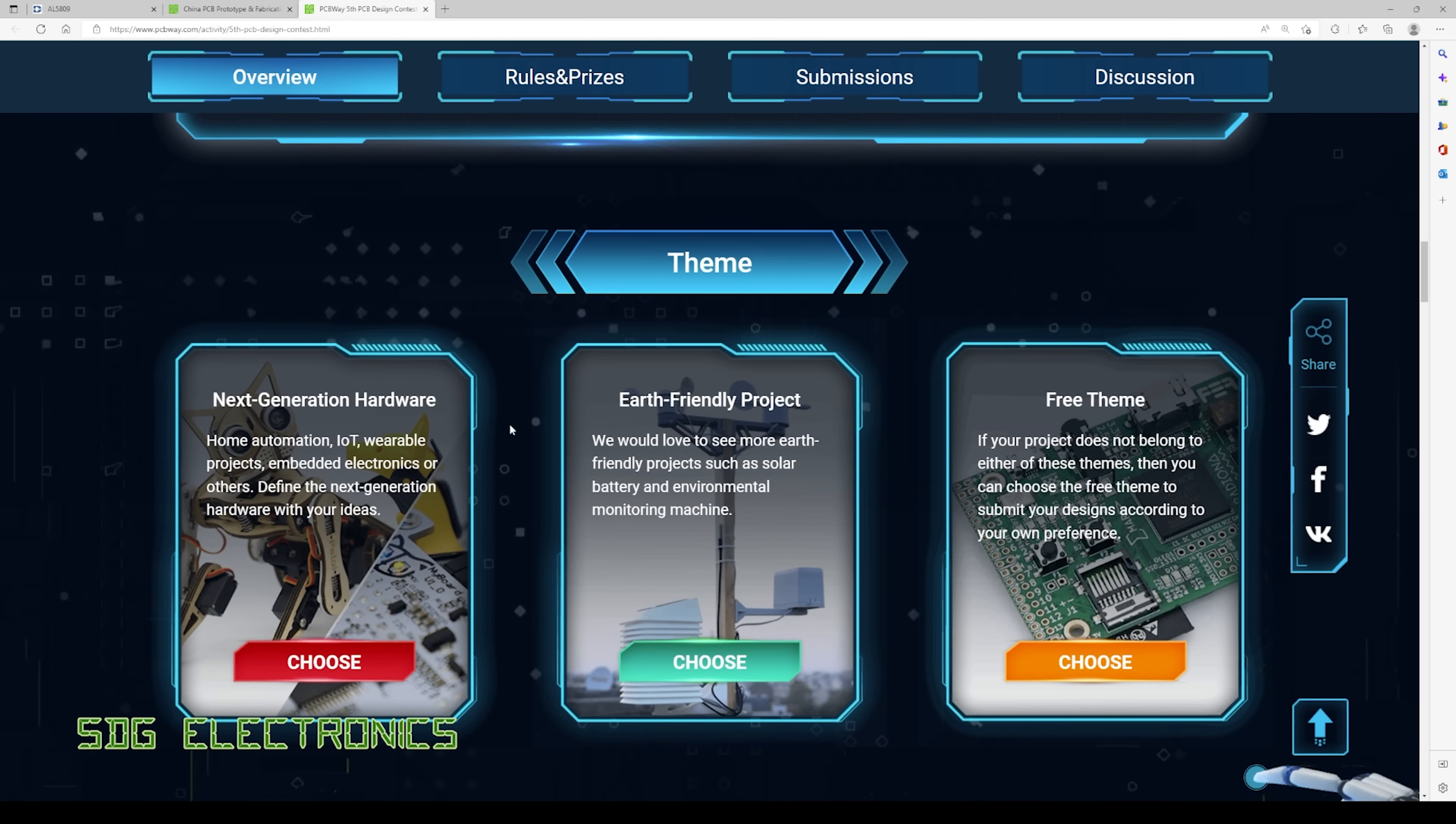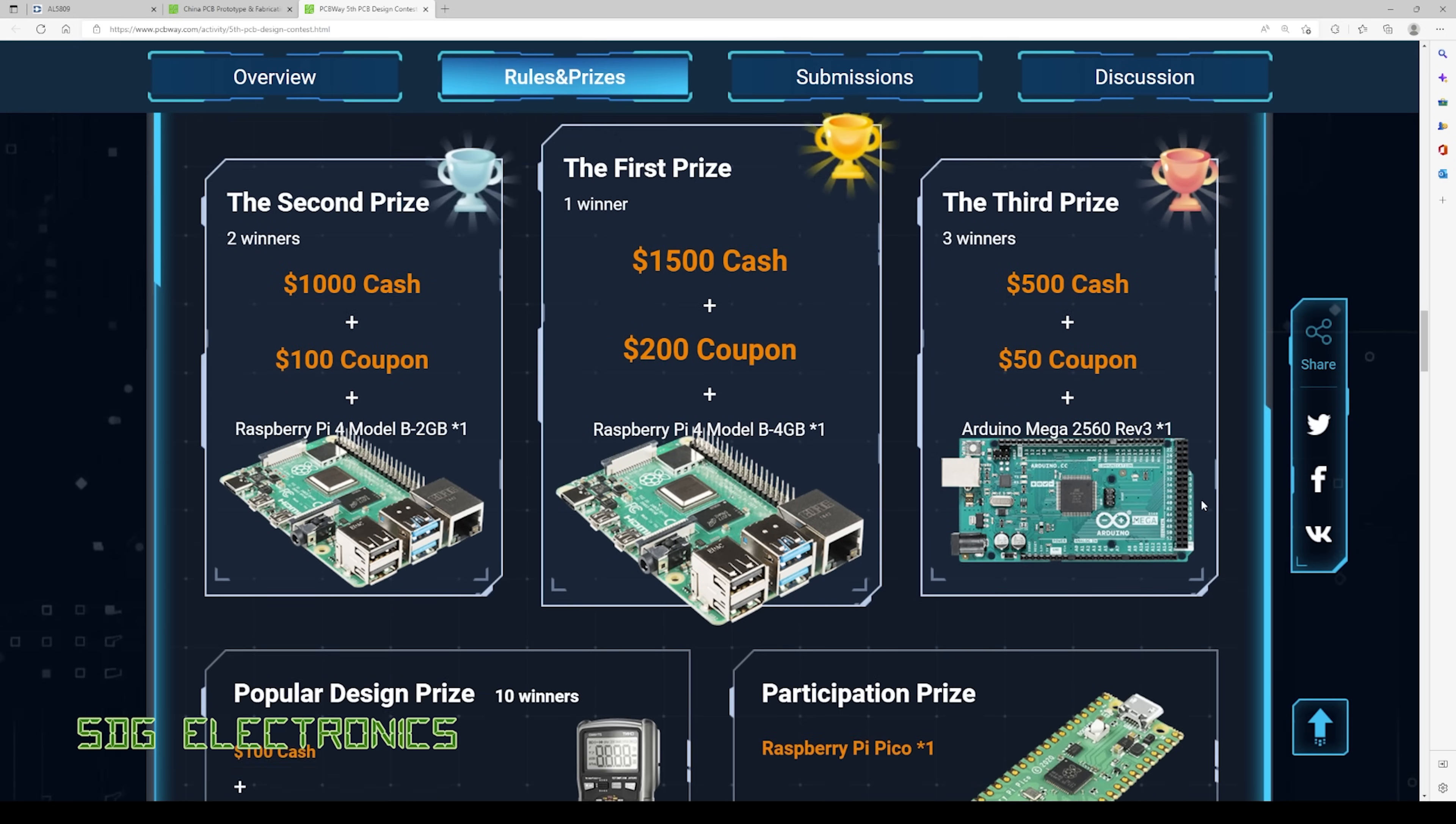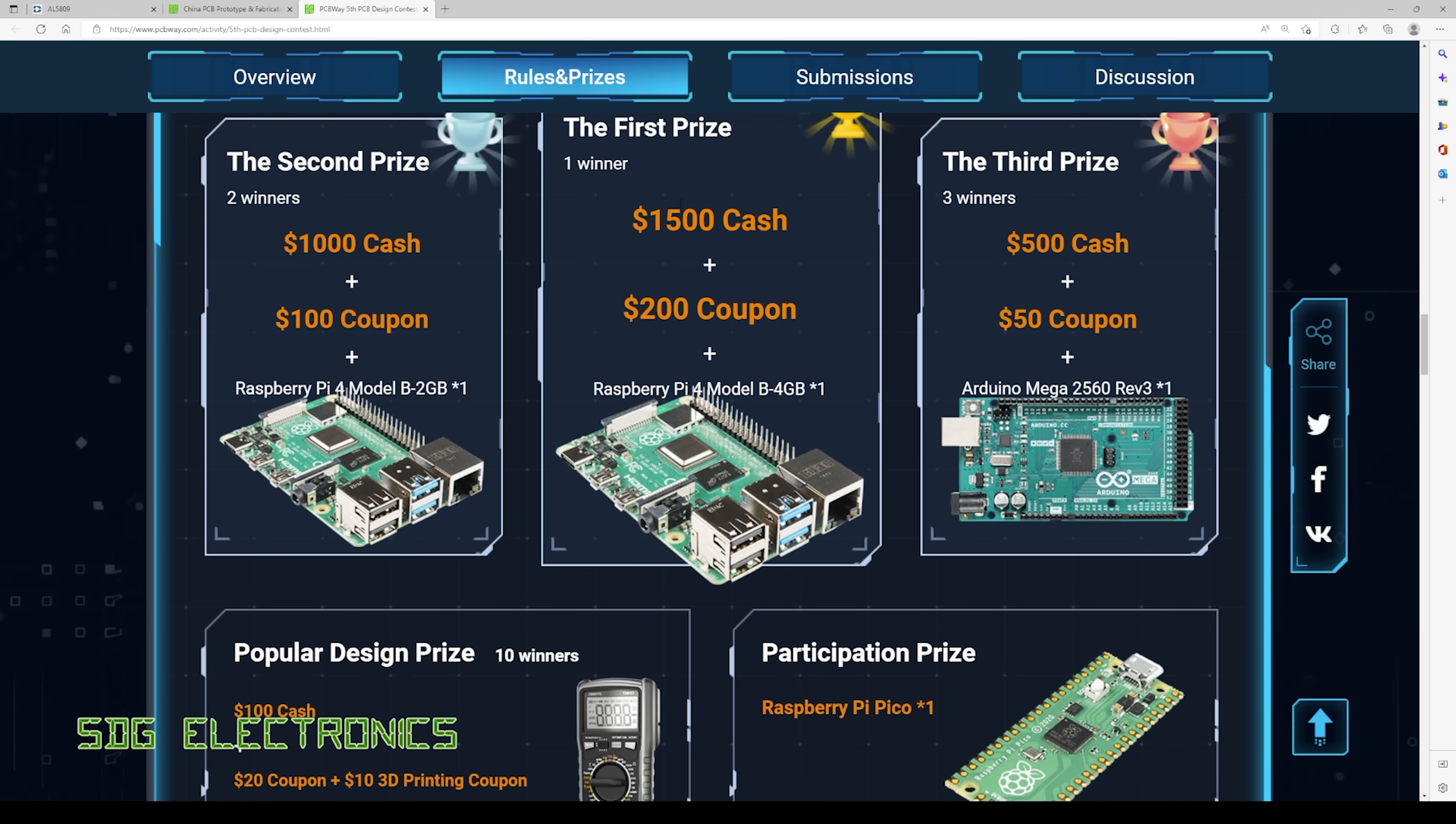So you submit your design based on one of the three categories here and at the end of the competition period they will be judged by the panel of judges and the prizes are well worth taking a look at. So as you can see first prize is $1,500 cash plus a $200 coupon plus a Raspberry Pi 4.